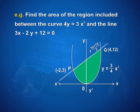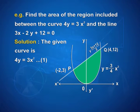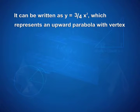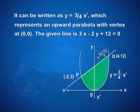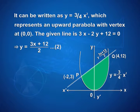One more example: find the area of the region included between the curve 4y = 3x² and the line 3x − 2y + 12 = 0. The given curve 4y = 3x² can be written as y = (3/4)x², representing an upward parabola with vertex at the origin (0, 0). We have an upward parabola with point P(−2, 3) and point Q(4, 12). The given line 3x − 2y + 12 = 0 gives y = (3x + 12)/2.